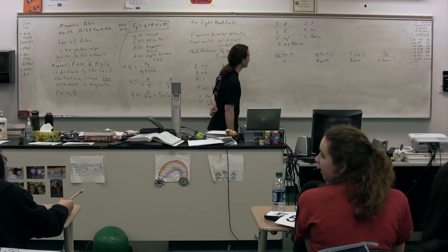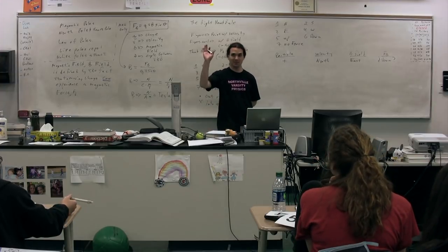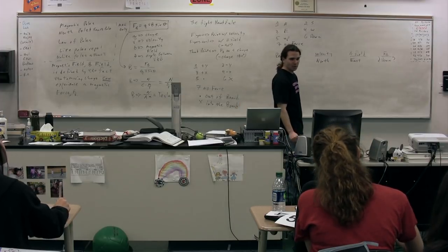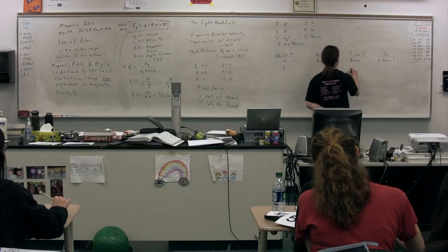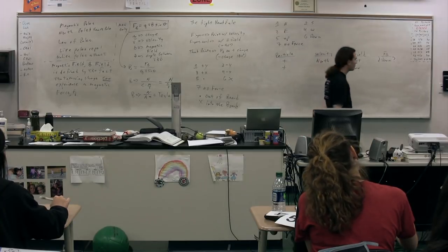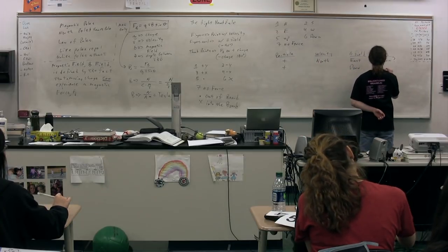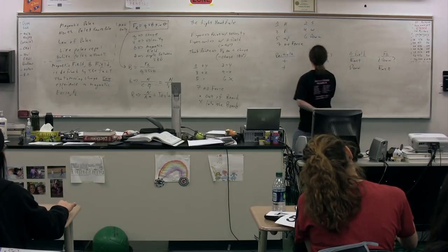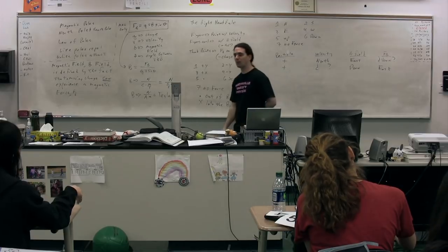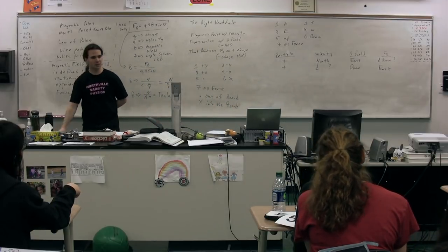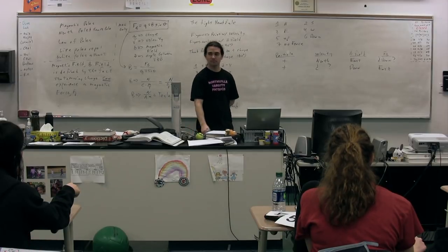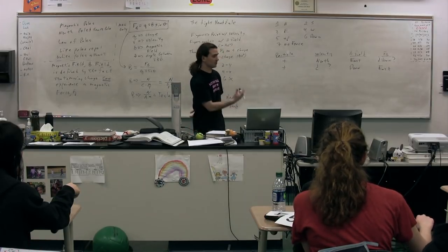So we have a positive charge. We know the direction of the magnetic field is down. We know the direction of the magnetic force is east. Next, we are trying to find the direction of the velocity. So this one's a little bit different, because up until now we've known the velocity every time. Now we don't know the velocity.